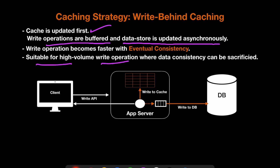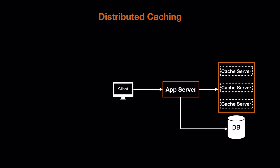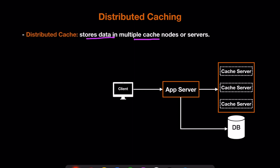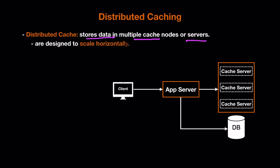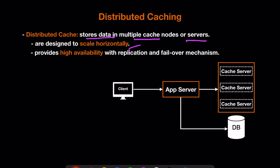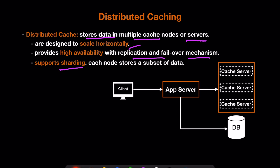Write-behind caching is suitable for high-volume write operations where some data consistency can be sacrificed in favor of better performance. Now let's talk about distributed caching. In larger-scale systems, a single centralized cache is sometimes not good enough. Distributed cache stores data across multiple cache nodes or servers and is designed to scale horizontally — we can add any number of cache servers based on load. It also provides high availability through replication and failover mechanisms.